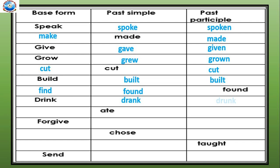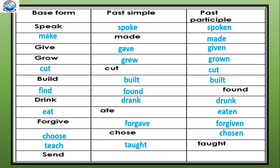Drink, drank, drunk. The past simple is ate — its base form will be eat, ate, eaten. Forgive, forgave, forgiven. Past simple choose — its base verb will be choose, and past participle will be chosen. The past participle is taught, its base verb will be teach, taught, taught. Send, sent, sent. Hope now it is clear how to write the past participle of a given verb, and hope this table is also done by you all.